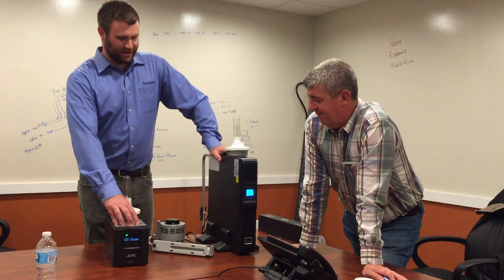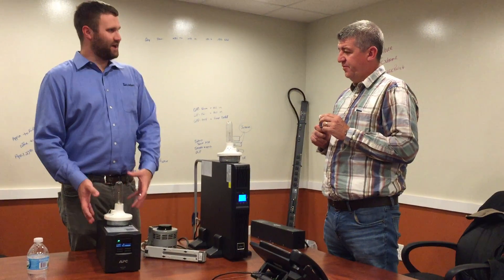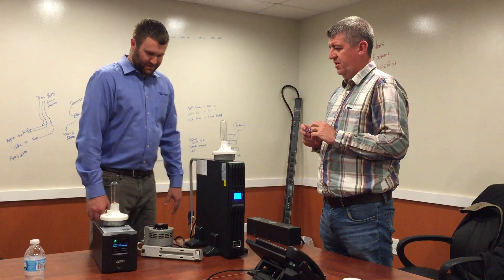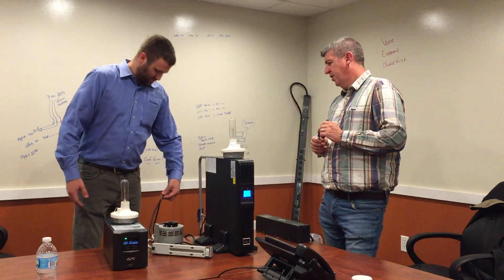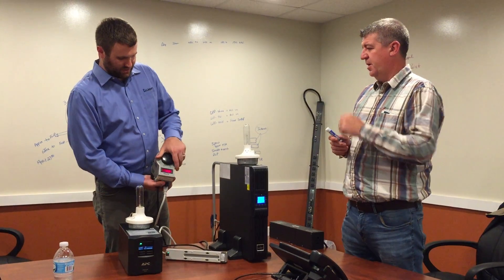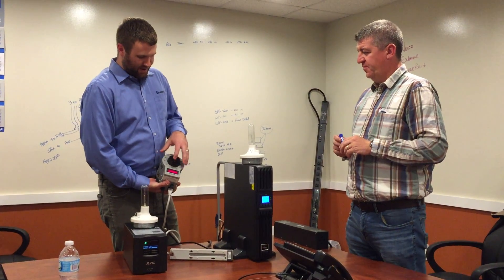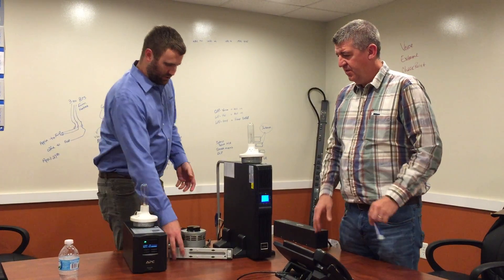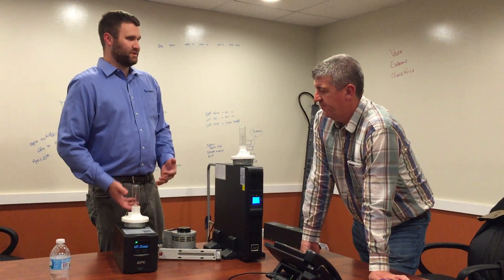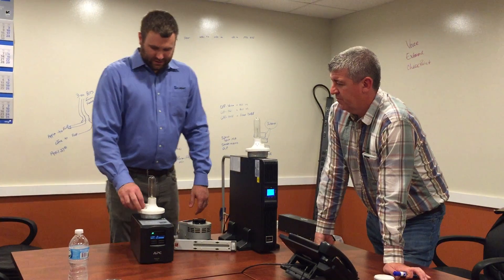We're showing the technology differences between UPSs — not necessarily different manufacturers — but demonstrating the difference between a traditional line interactive style UPS versus an online double conversion system, also called a true online UPS. For the demonstration, we're bringing in utility power, or dirty power, through a variac which allows us to modify voltage and create a basic brownout condition. That brownout, fed to both UPSs through a power strip, will let us visualize what your switches and servers see on the output side of a power conditioning device.